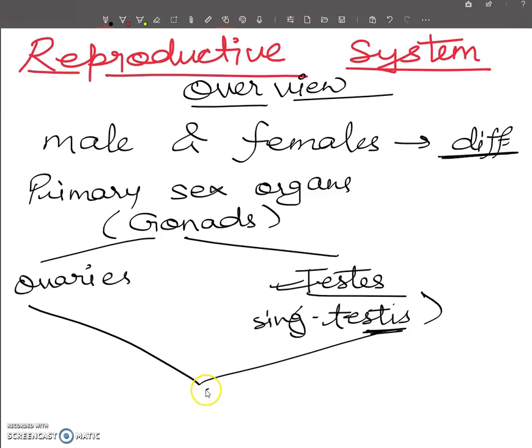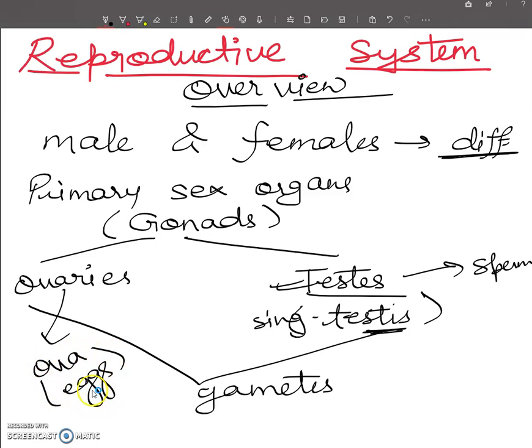These sex organs, both the sex organs, will produce gametes. For example, testis will produce sperms and ovaries will produce ova or you can say egg. Don't be confused with ova and ovum. Ovum is singular term.